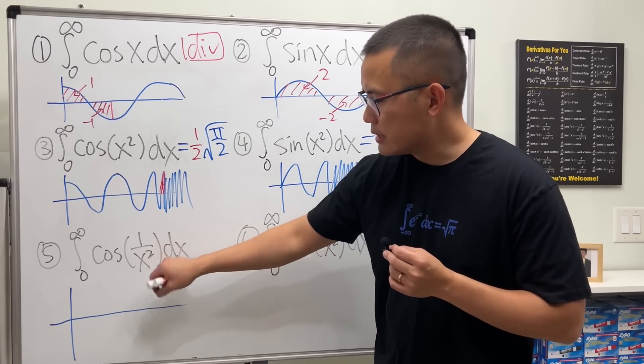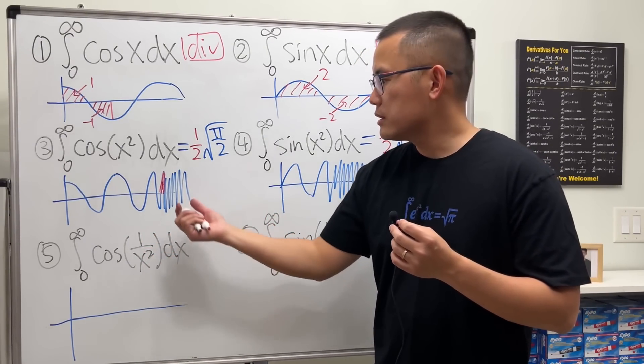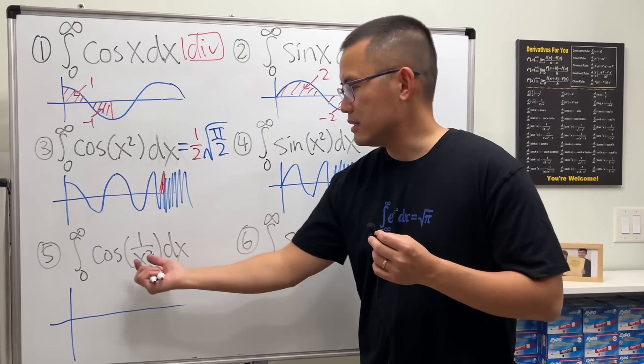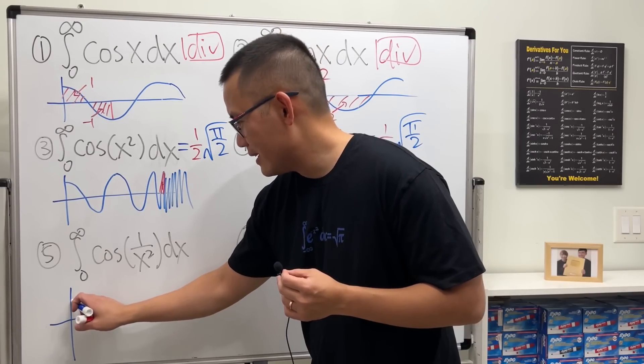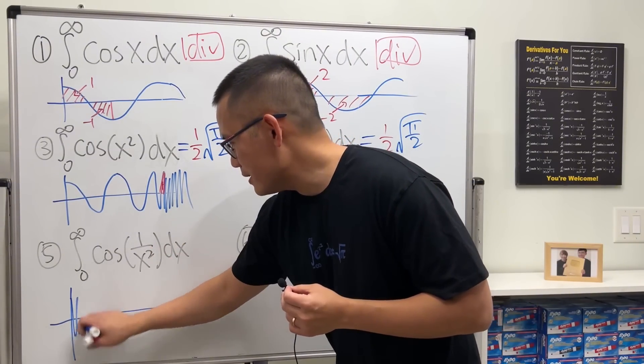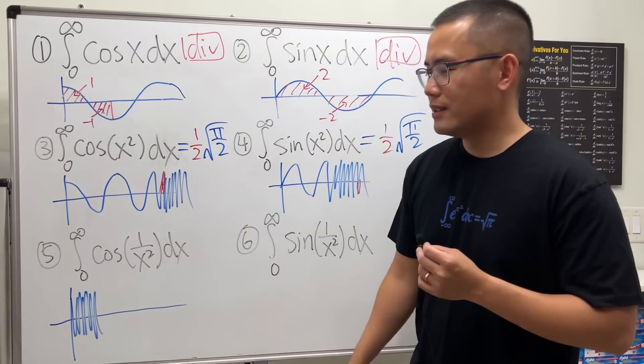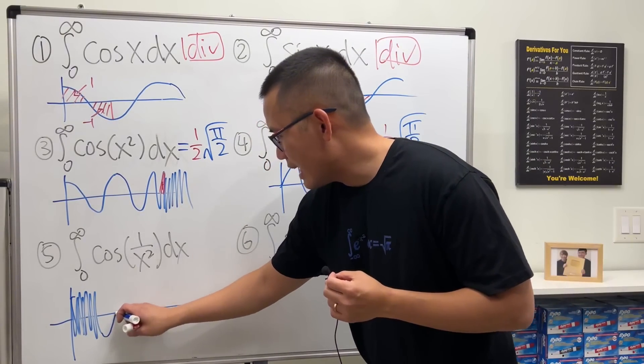So as x gets smaller and smaller, 1 over x squared is getting bigger and bigger. So it's going to be like this part because it's inside of the cosine function. So what's going to happen is like this. It's not starting at 0, 1. x cannot be 0. It's just going to be like this. You cannot even tell what it is. Just like that part. And then, it's going to jump back up like this.